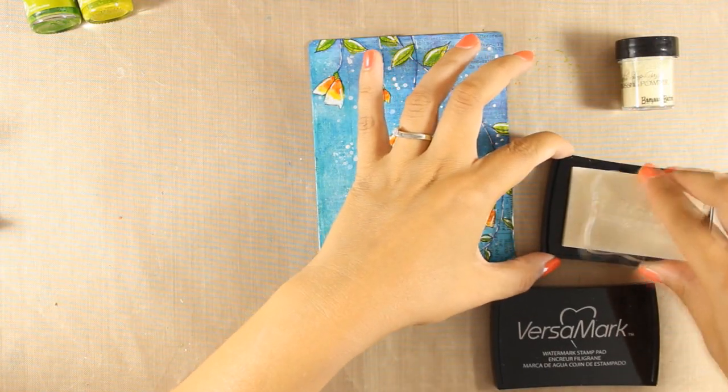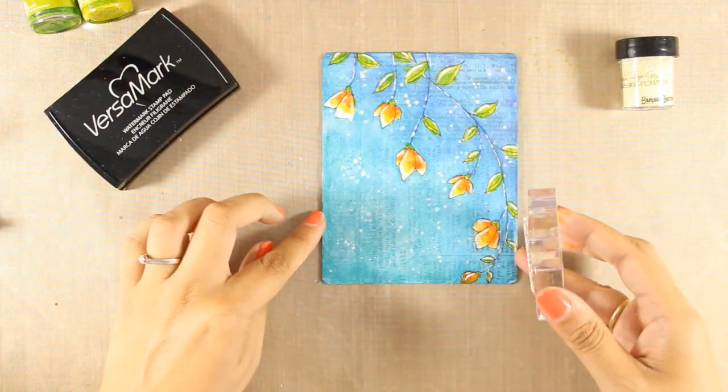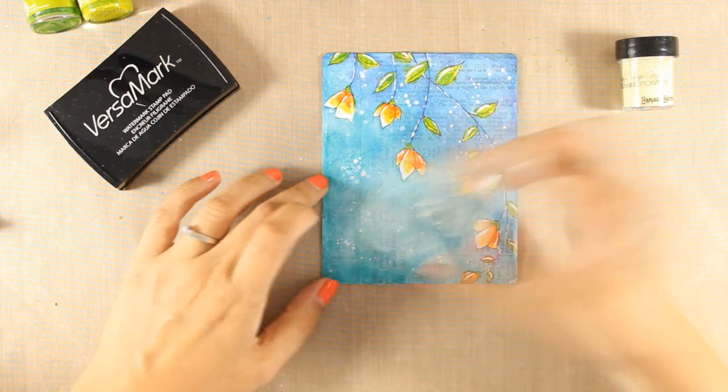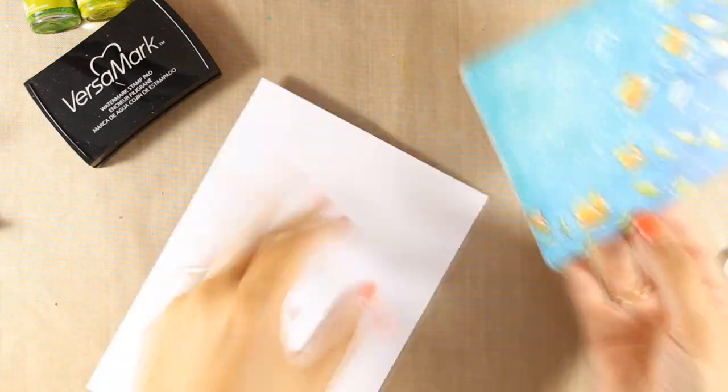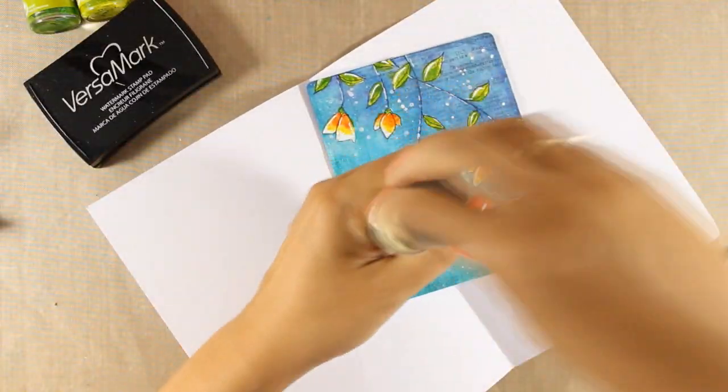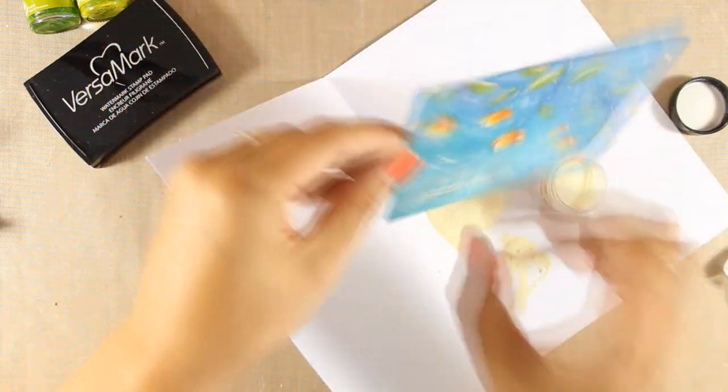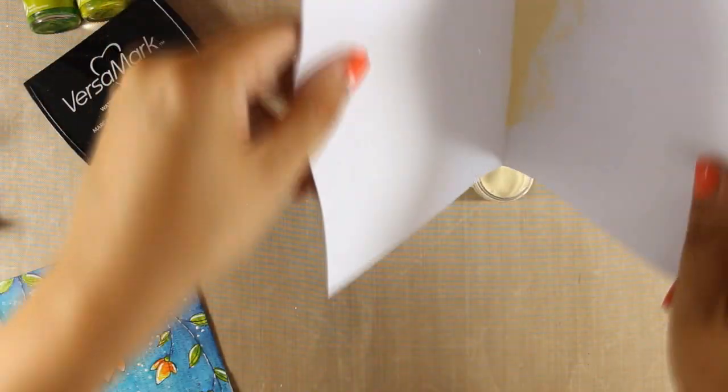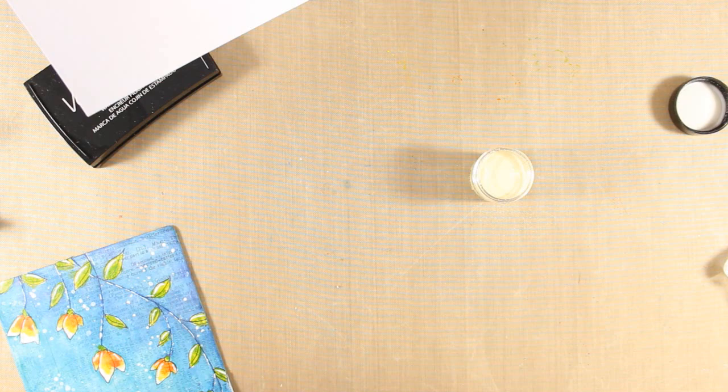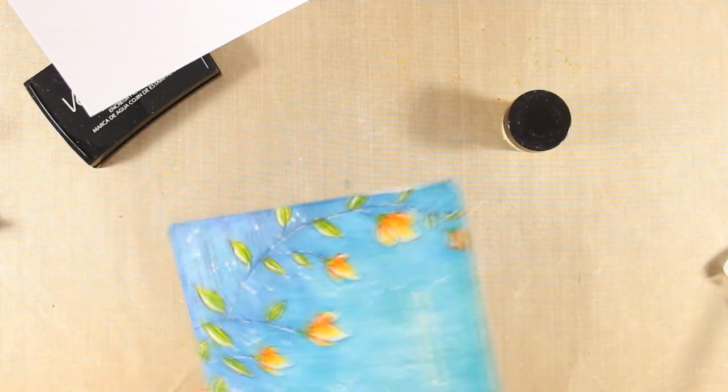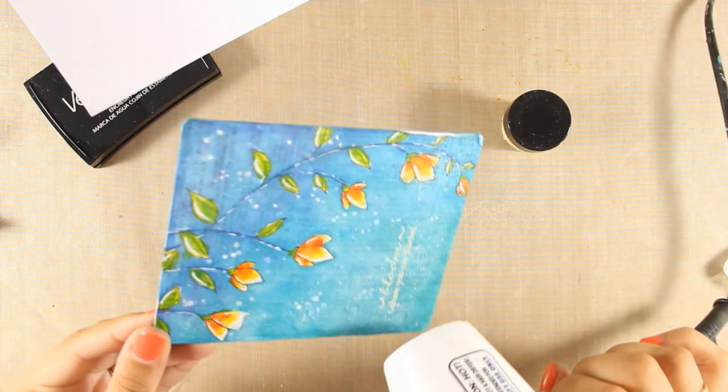For my quote today, I am going to go with this saying that says bloom where you are planted. I am going to stamp it with Versamark. This is just a watermark ink. It is totally transparent and I can apply some embossing powder on top which is going to stick only where I have stamped. Now I am going to use my heat gun and I am going to melt down this embossing powder, and this is going to give me a nice embossed effect.